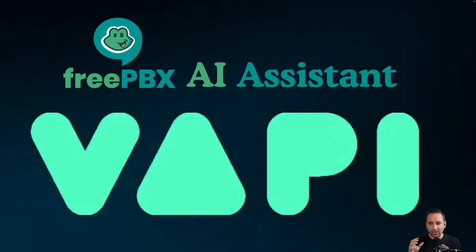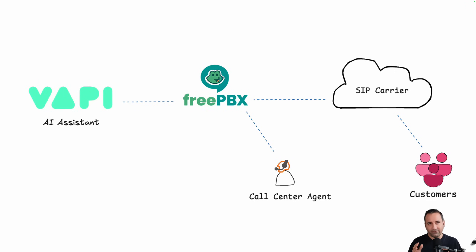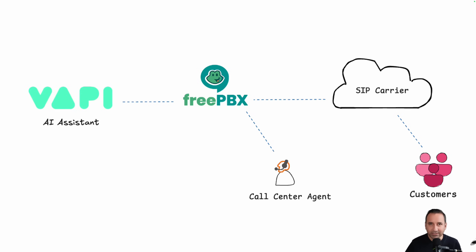Today in this video I want to teach you how to connect these two platforms together. When you have a call from your customers to your internal telephony system — FreePBX — you can route it to your AI assistant in WAPI. The AI assistant can answer the call, acting as a support or technical department, and if needed, transfer the call back to your call center agents.